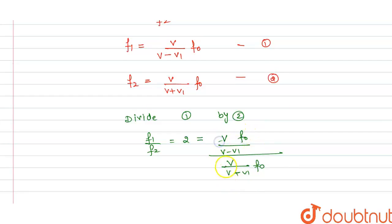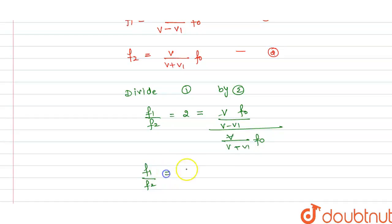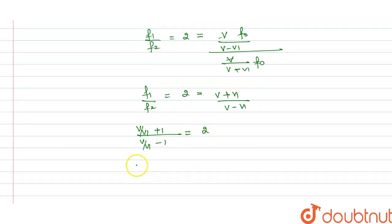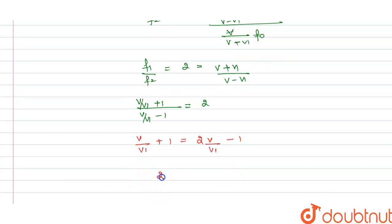The f0 terms cancel out, and we are left with f1 divided by f2 equals 2, which equals (v plus v1) divided by (v minus v1). Dividing numerator and denominator by v1, we get: (v/v1 plus 1) divided by (v/v1 minus 1) equals 2. Solving this: v/v1 plus 1 equals 2 times (v/v1 minus 1).